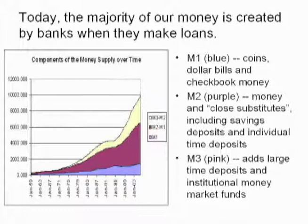M2 includes coins, dollar bills, checkbook money, and close substitutes including savings deposits and individual time deposits. M3 then adds the large institutional deposits, money market funds, pension funds, and mutual funds. That money doesn't even go into banks — banks only insure $250,000 in deposits via FDIC insurance. So if you have a lot of money, like a pension fund or a mutual fund that wants to park money overnight or between sales, they put it in the repo market or the shadow banking system, which doesn't involve deposits at all, but that money is still competing in the marketplace and adding to the money supply.